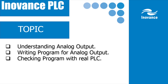First thing first — understanding what is analog output. Analog output could be a voltage or current. In Inovance PLC, the same output can be used as voltage output or current output. The voltage output range is 0 to 10 volts, and the current output range is 0 to 20 milliamp or 4 to 20 milliamp.